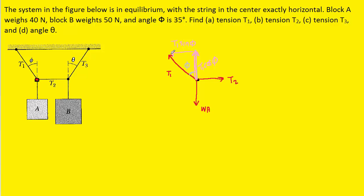Because the x component is pointing to the left, we mark it as a negative force. Now that we have the y and x components, we can erase T1 from the drawing, because when we analyze forces we only want to be considering their y and x components. After breaking the forces into components, we can apply Newton's second law, first in the y direction. The sum of the forces in the y direction equals mass times acceleration. The junction of those ropes is at rest and not accelerating, so the acceleration is zero, making the right-hand side zero. This is a situation known as equilibrium, when the sum of the forces equals zero.